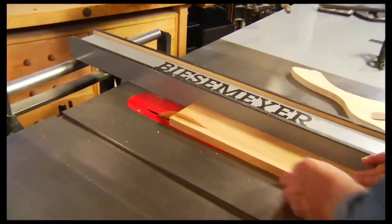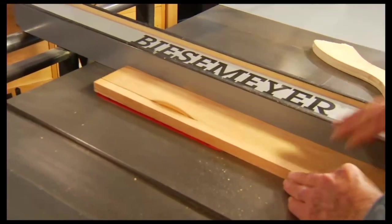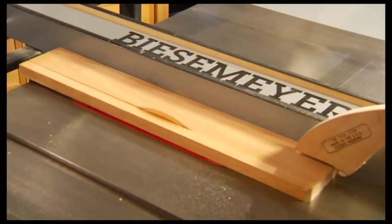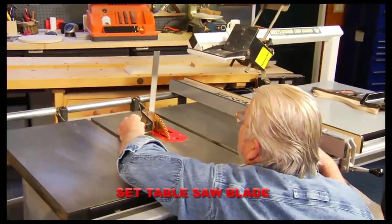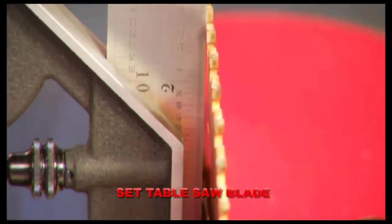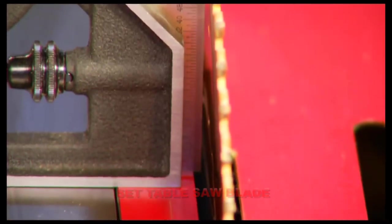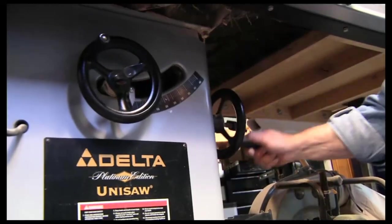Even though most table saws have stops at 90 degrees, these can be inaccurate because of dirt, dust, wear and incorrect adjustment. Performing a check with a combination square ensures the blade is perfectly perpendicular to the table.